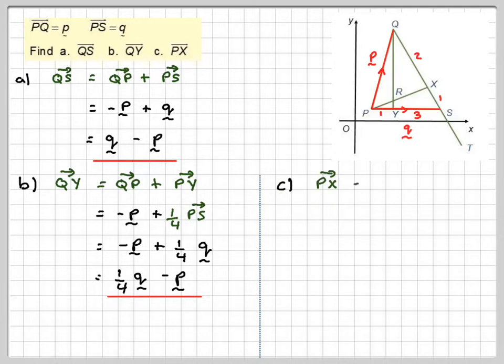C, PX is PQ, so we're going from P to X. We're going to go PQ plus QX. So PQ is p, now QX is 2 thirds of the way along QS.